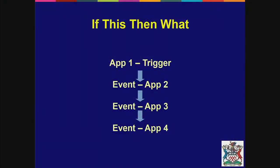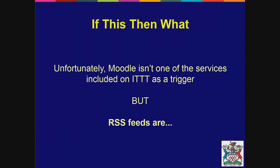But there are things in Moodle that do trigger If This Then That, and the one I used was RSS feeds. The concept I'd been asked about was allowing staff to post to Moodle forums. Well, Moodle forums can generate RSS feeds. If This Then That can use those RSS feeds as its trigger, and then you can say: if you've received the RSS feed, do something with it.